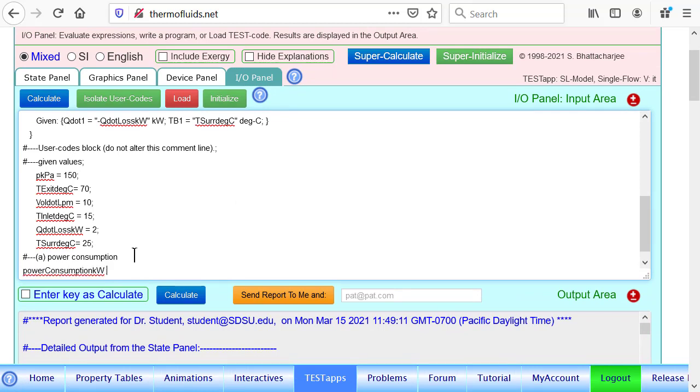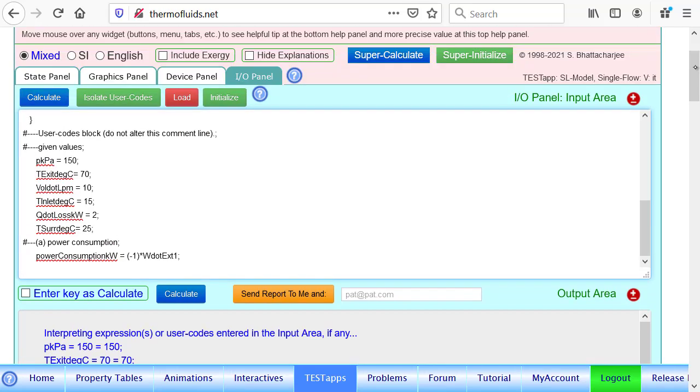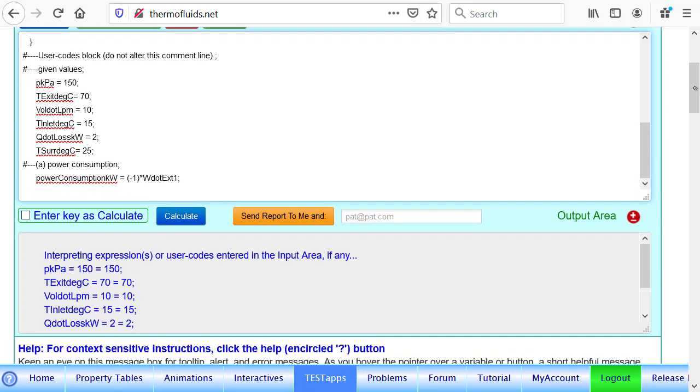So if I want to know the power consumption in kilowatt, it is simply negative one times w dot ext one. Notice that w dot external is of course an algebraic quantity which is negative in this case, so I multiply by negative one to get a positive power consumption because consumption tells us the direction in which the power is going.